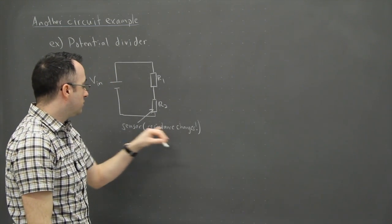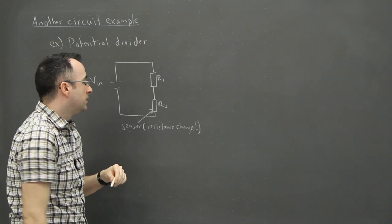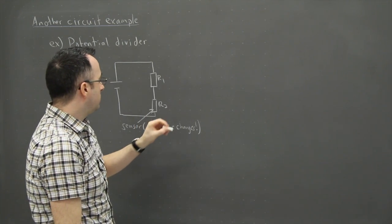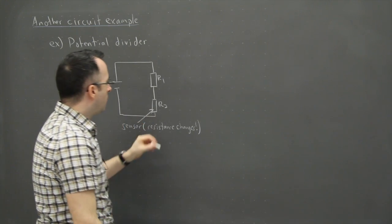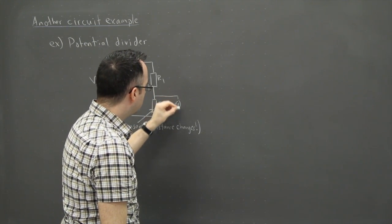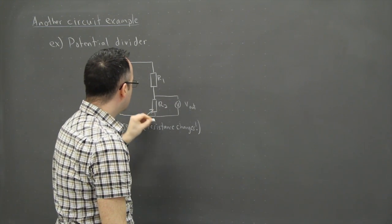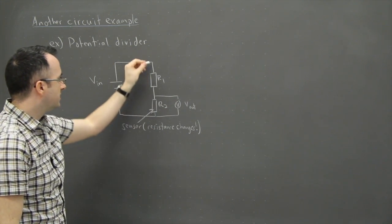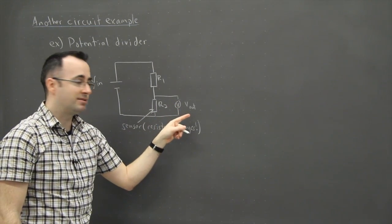So this is a resistor whose resistance changes. This is what we call our sensor. Now, what we're going to do then is passively, this is the active circuit, so to speak, this is what's really going on. What we're going to do is just place a little voltmeter across this right here as well. Okay, and this is, I'm going to call Vout. This is just a little voltmeter here.